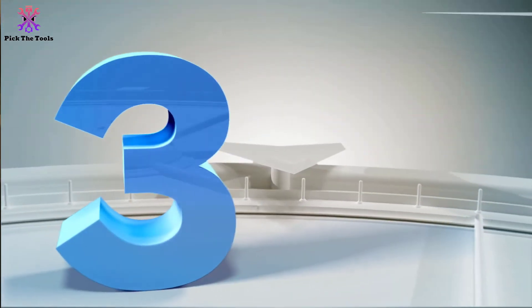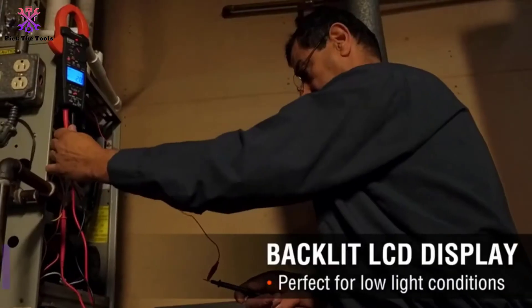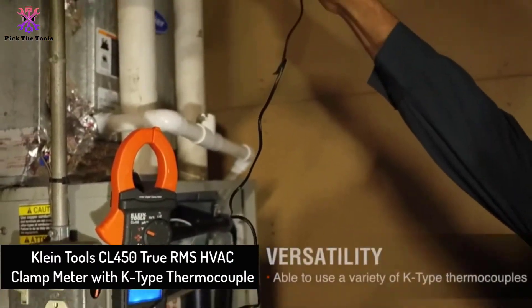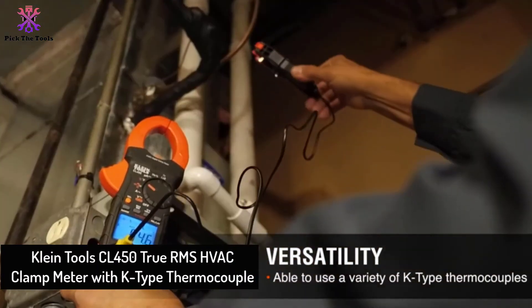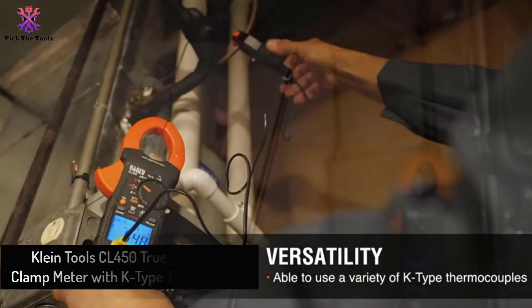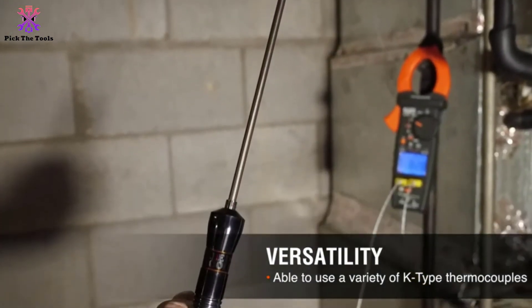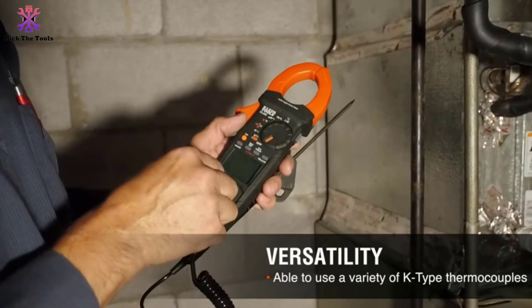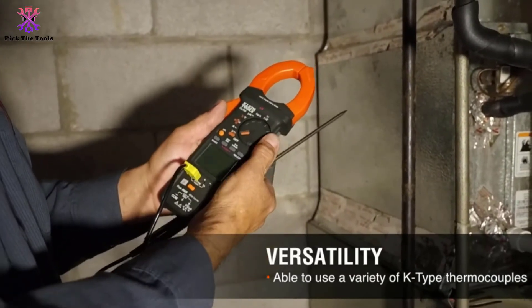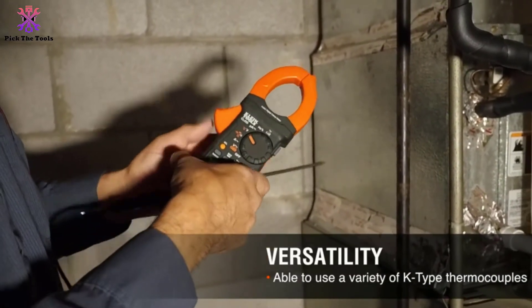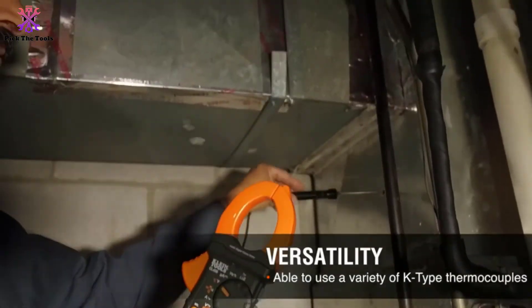At number 3, we have the Klein Tools CL450 True RMS HVAC Clamp Meter with K-Type Thermocouple. The next one on our list is Klein Tools CL450 True RMS HVAC Clamp Meter with K-Type Thermocouple. High durability material and excellent features make this tool for exclusive use by electricians.